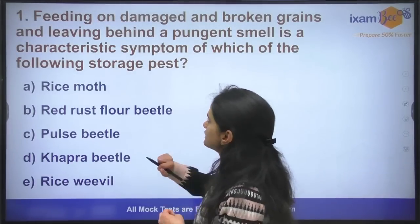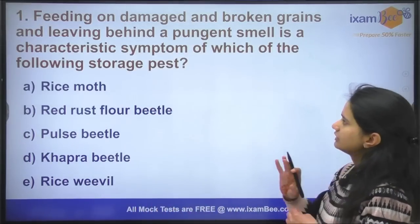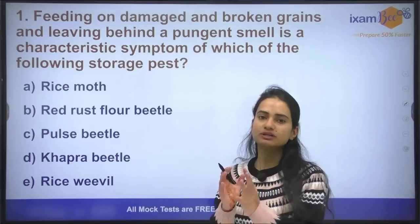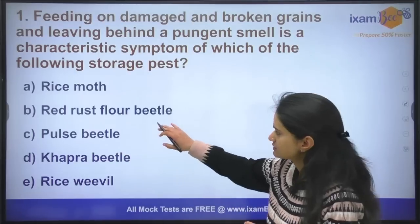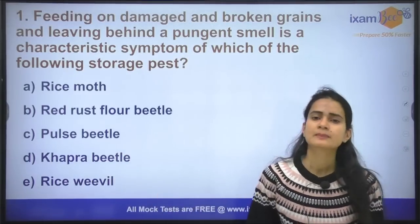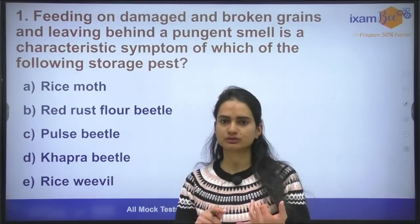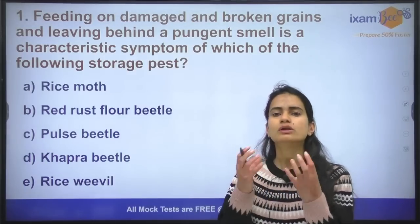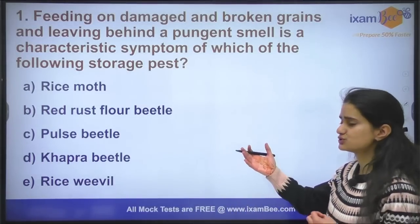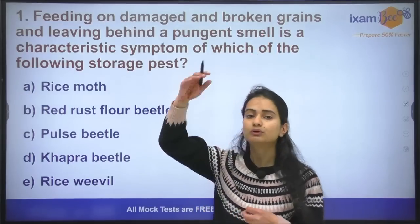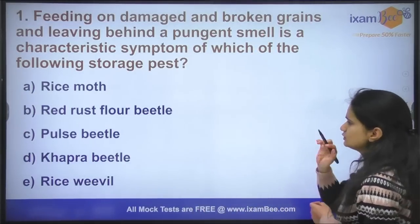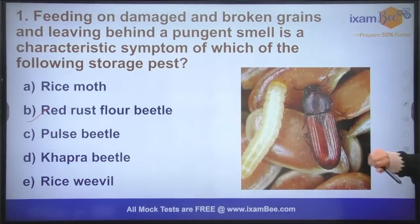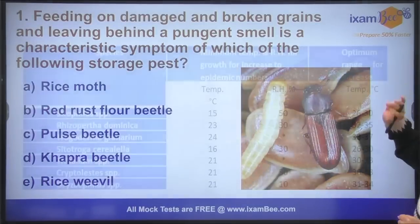Starting with question number one: feeding on damaged and broken grains and leaving behind a pungent smell is a characteristic symptom of which stored grain pest? The options are rice moth, red rust flour beetle, pulse beetle, khapra beetle, and rice beetle. There are basically two types of feeders — primary feeders, which feed on whole grains, and secondary feeders, which feed on broken grains. The red rust flour beetle is the secondary feeder.